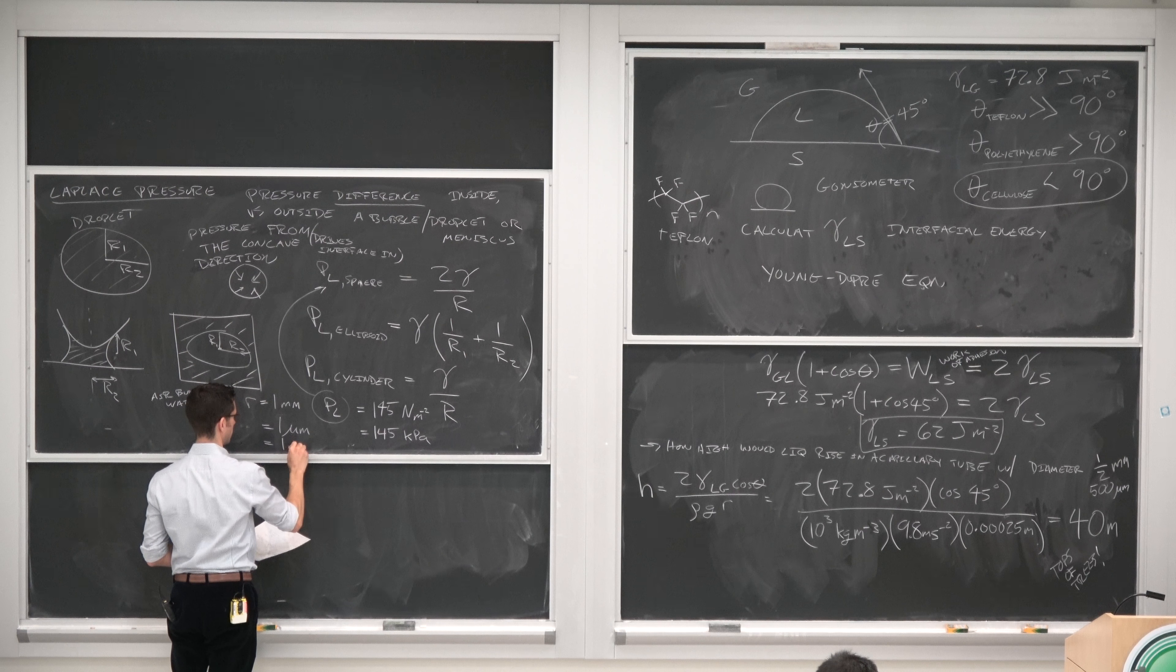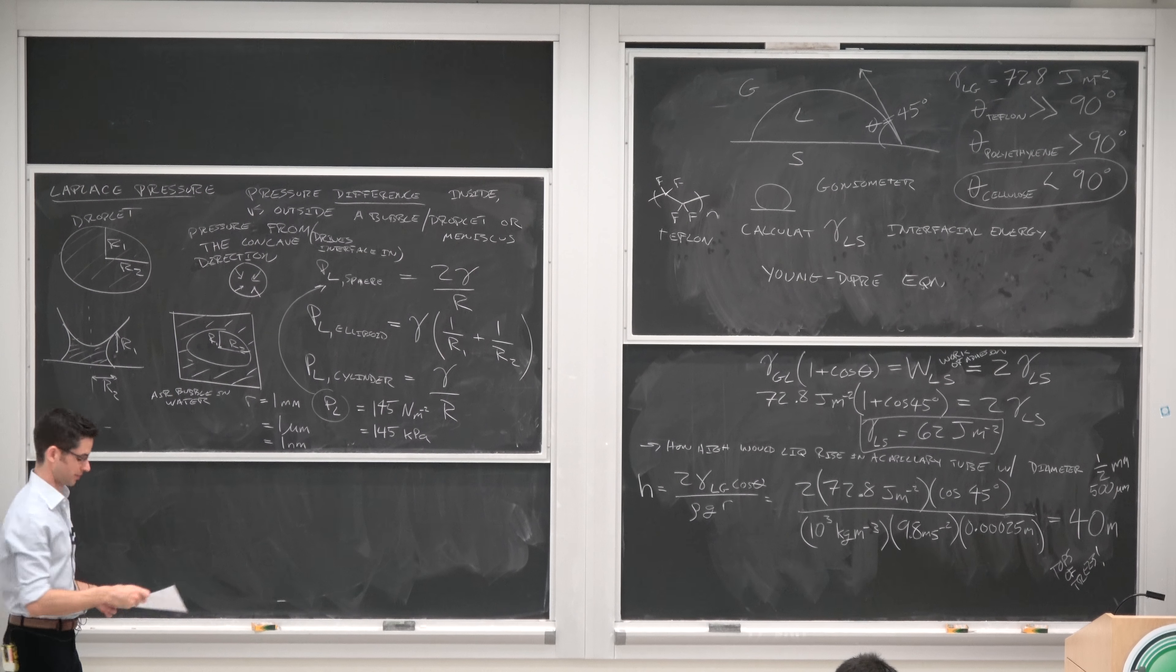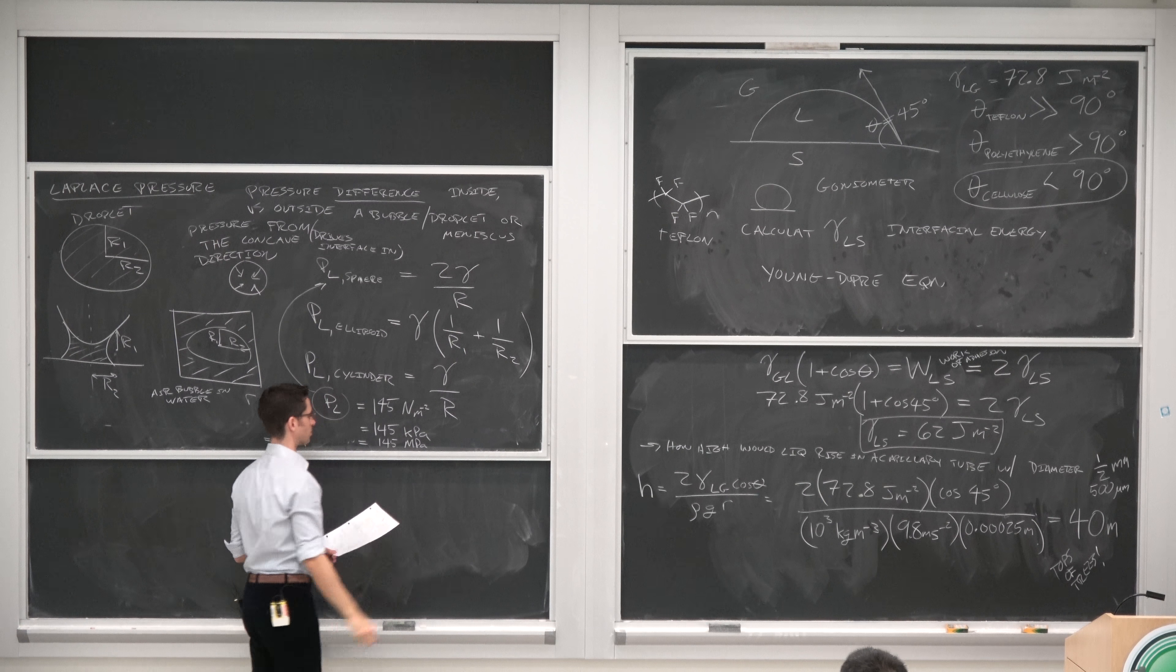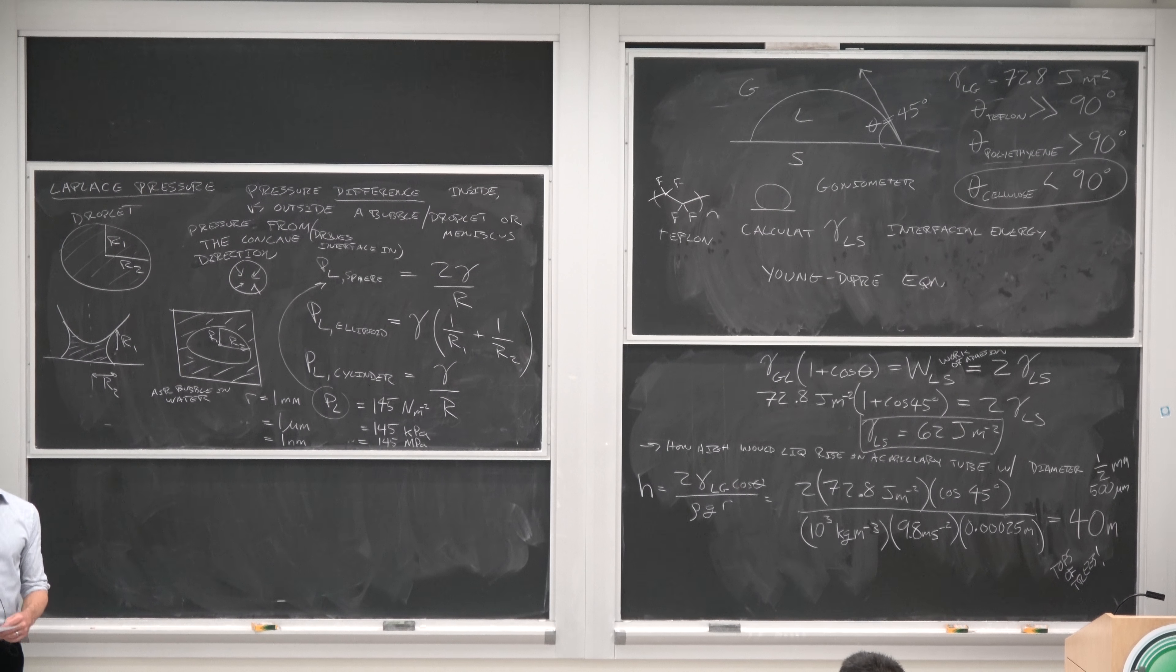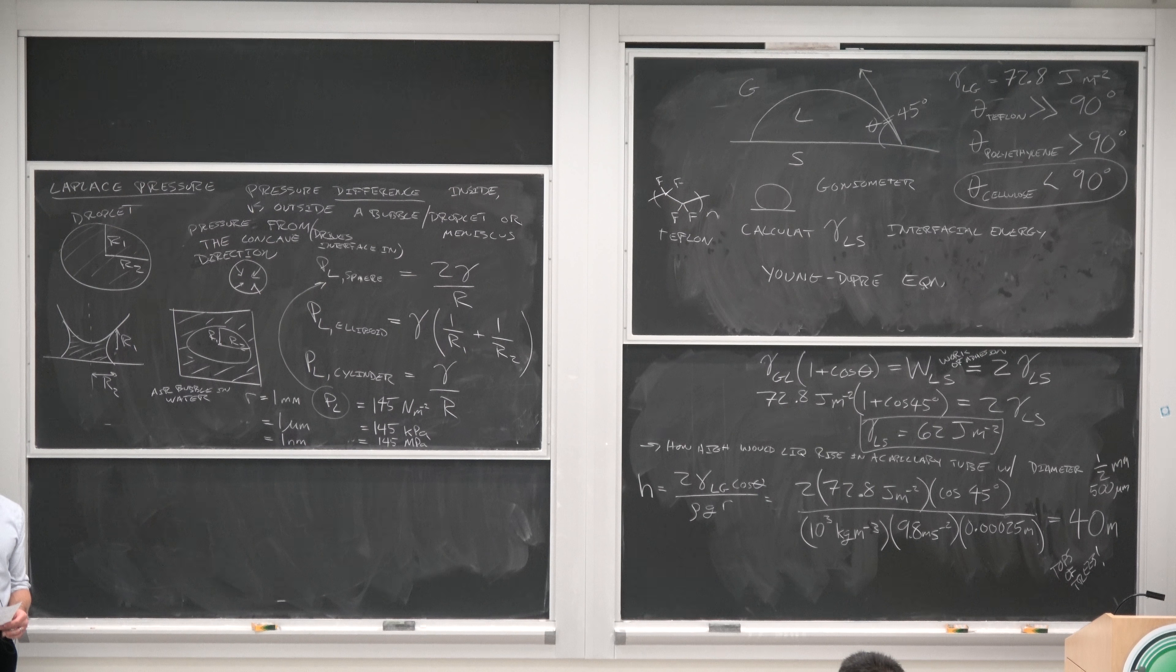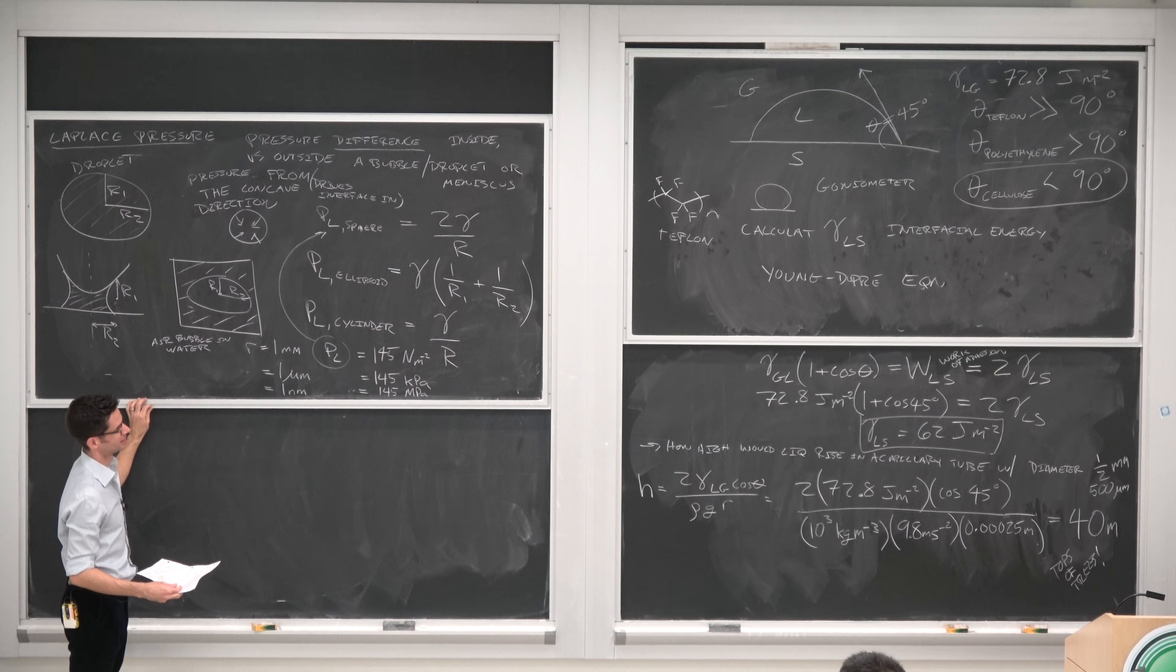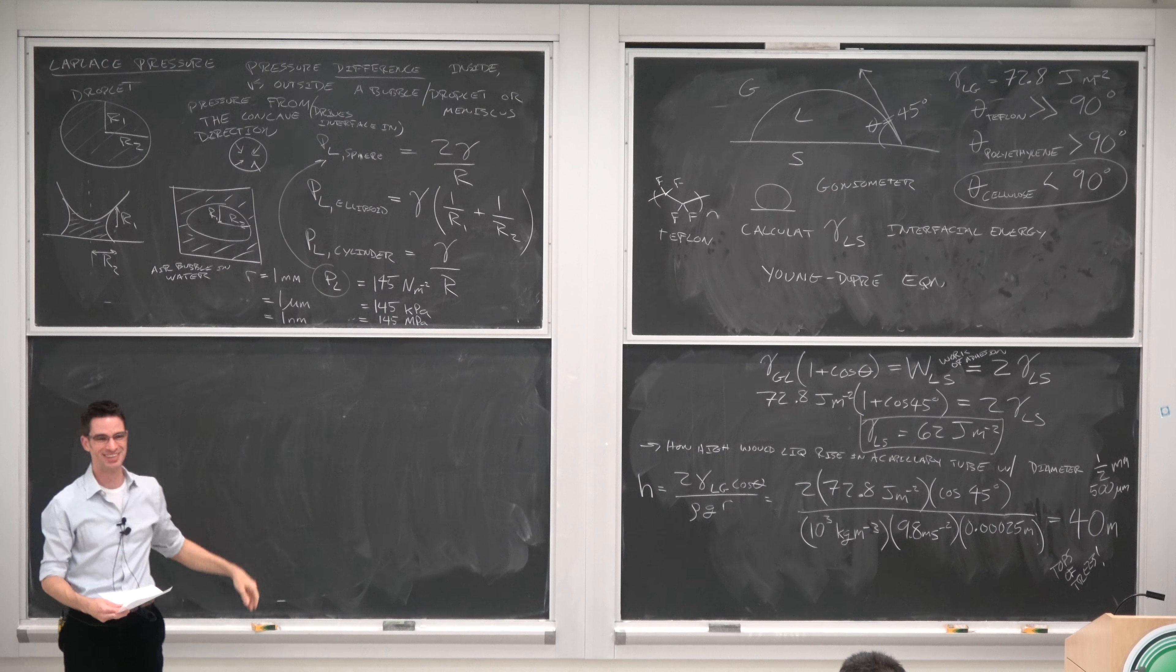So now we have an extra atmosphere of pressure inside the bubble. The absolute pressure is now 2 atmospheres. But what if we have a bubble with 1 nanometer or a droplet with a nanometer radius? Then we have something ridiculous: 145 megapascals, so 145 atmospheres. Is that right? Huge amount of pressure inside the bubble.